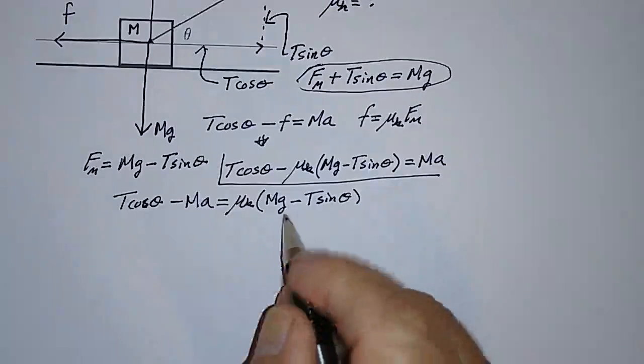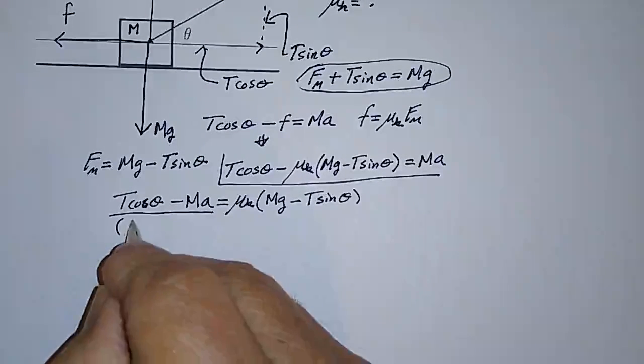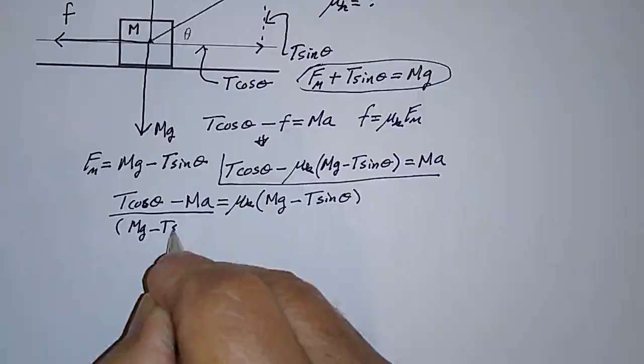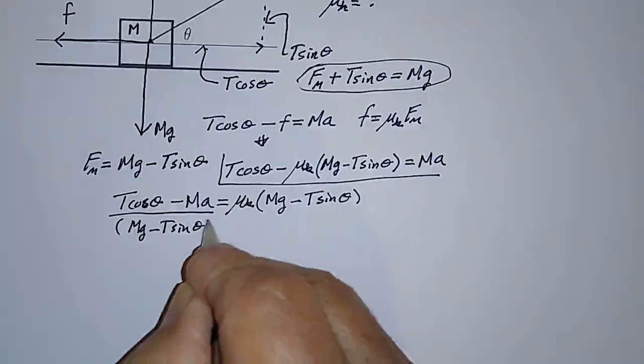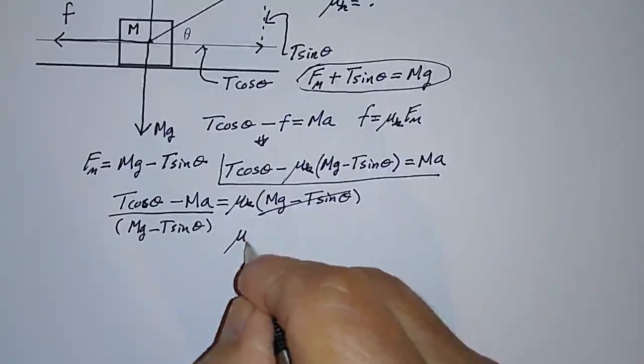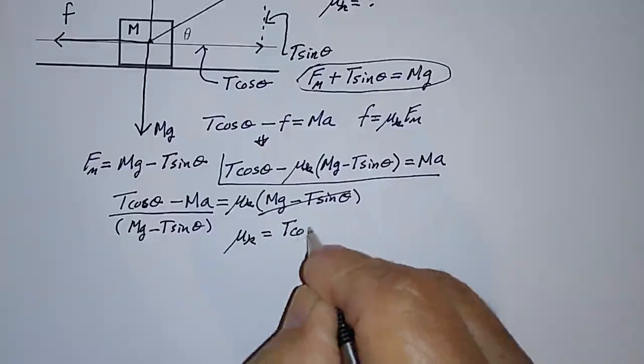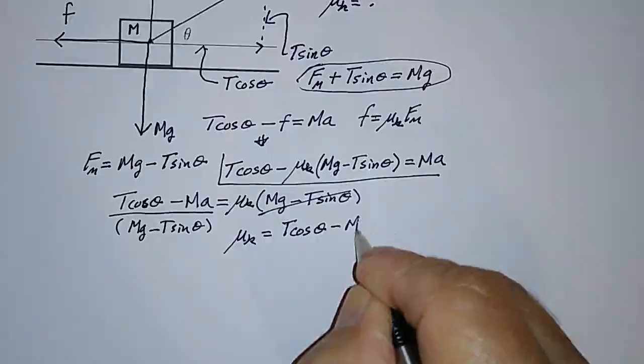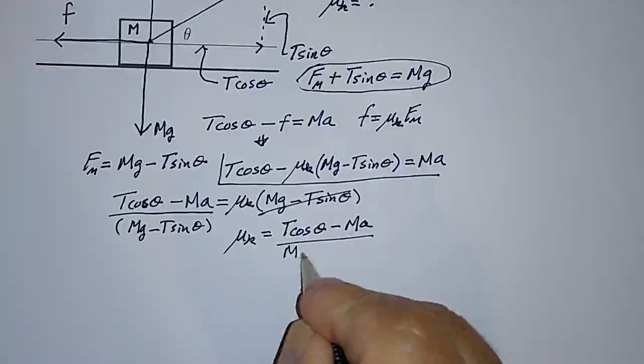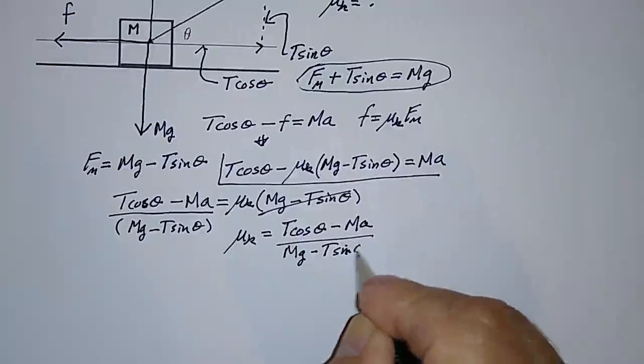Minus MA is equal to mu sub k times Mg minus T sine theta. And then divide both sides by this factor. I'll write this as Mg minus T sine theta. So that the coefficient of friction mu sub k is equal to T cosine theta minus MA divided by Mg minus T sine theta.